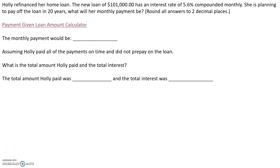Holly refinanced her home. The new loan of $101,000 has an interest rate of 5.6% compounded monthly, which means she is making monthly payments. She is planning to pay off the loan in 20 years. What will her monthly payment be?